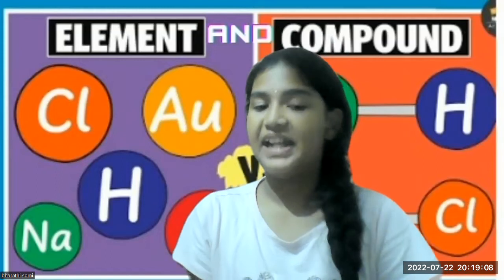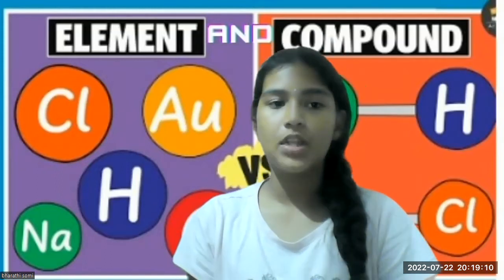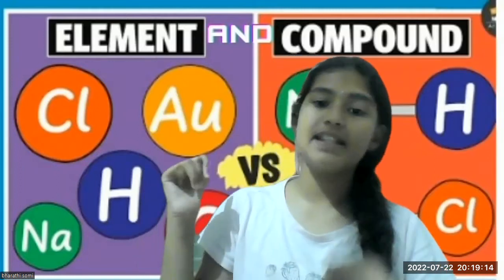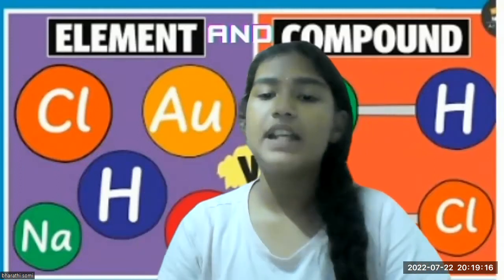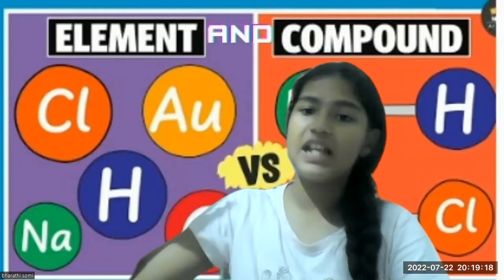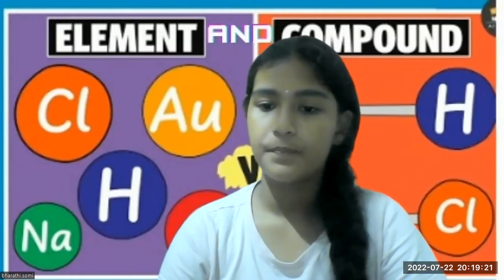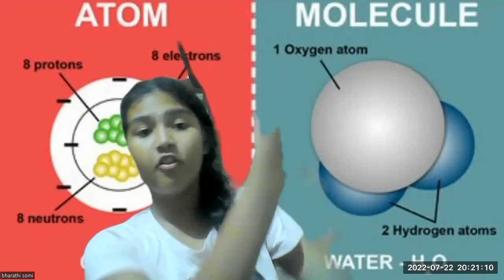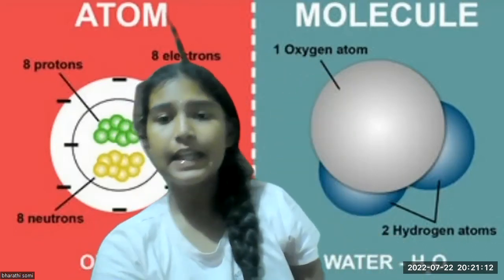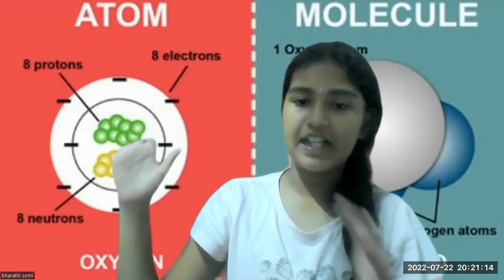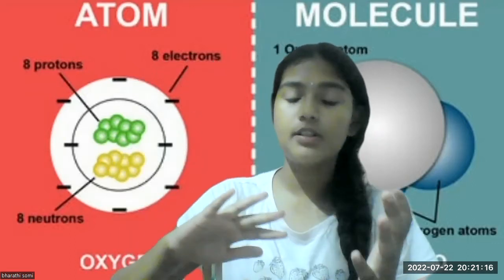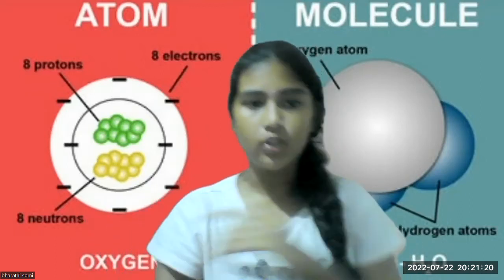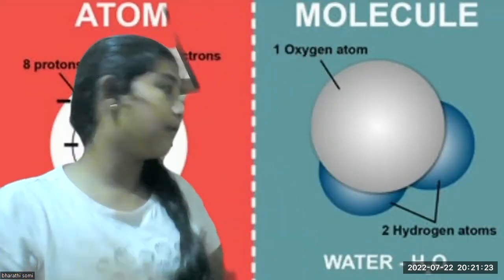Two or more atoms combined is known as a molecule. These molecules are of two types: one is elements and one is compounds. Let's look deeper at what elements and compounds are. Here is an example of a molecule as shown on screen. Please ignore the parts about electrons and protons — we will cover those further in the video. This is how a molecule is made up.